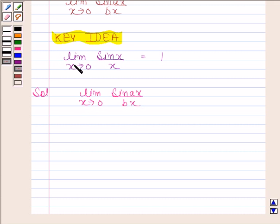Now in order to make use of this result, we have to make angle of sin and denominator to be same. So we will now multiply and divide this expression by a. So now this is equal to limit ax tends to 0 because x tends to 0 implies ax also tends to 0.